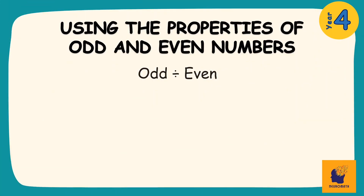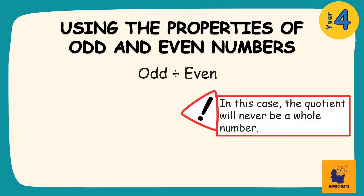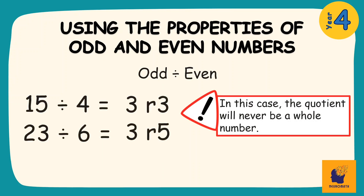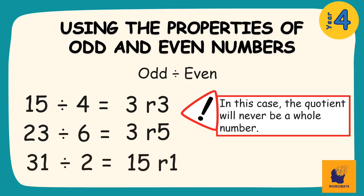The last thing we need to look at is what happens when an odd number is divided by an even number. In this case, the quotient will never be a whole number. No matter what the problem is, I will always get an answer with a remainder.